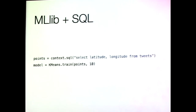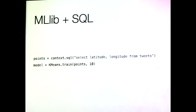MLlib plus SQL: the worlds of machine learning and SQL don't overlap much, but for preparing data and running machine learning on it they do. For example, you can take tweets, look for their latitude and longitude, and train k-means to build a model of latitude and longitude — probably giving you something that looks like a map of the world, showing where people tweet.